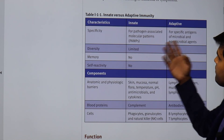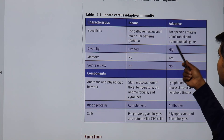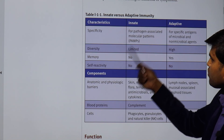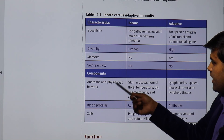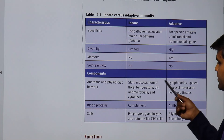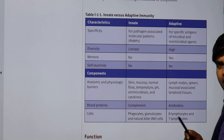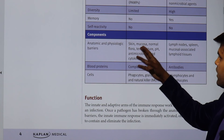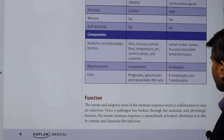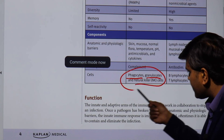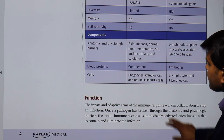Now, what is the difference between innate and adaptive immunity? Innate immunity is non-specific and relates to PAMPs, with limited diversity, no memory, and no self-reactivity. Adaptive immunity has high diversity, memory, and no self-reactivity. The components of innate immunity include anatomical and physical barriers — skin, mucosae, normal flora, temperature, pH, antimicrobials, and cytokines. Adaptive immunity components include lymph nodes, spleen, and mucosa-associated lymphoid tissue containing T and B cells. Blood proteins: innate uses complement, adaptive uses antibodies. Innate cells are phagocytes, granulocytes, and NK cells; adaptive cells are T and B cells only.